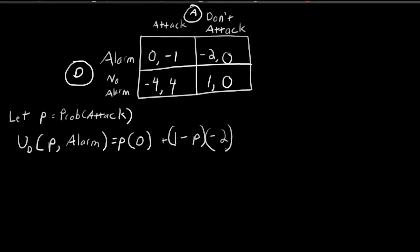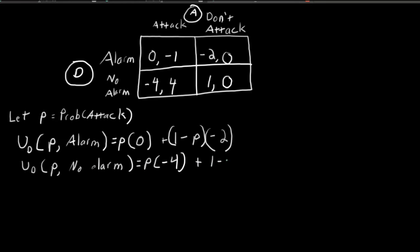What is the defender's expected utility when the attacker randomizes with probability P and the defender does not sound an alarm? In this case, with proportion P, he will earn negative four because the attacker will attack but the defender will not sound an alarm. However, with one minus P proportion of the time, the defender will not sound an alarm and the attacker will not attack, so the defender earns a reward of one.